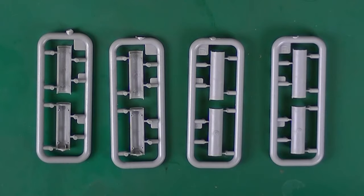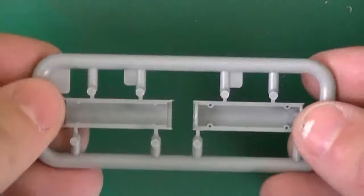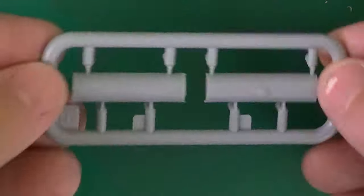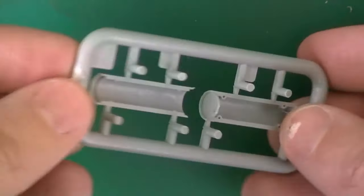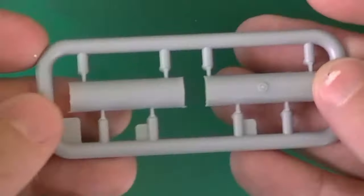And we have four of this sprue. This is just our fuel tank halves. Now you're going to have a seam on there. Besides that they look okay.